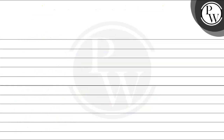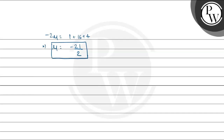So we have 1 + 16 + 4 + 2μ = 0, which gives 2μ = −21, and therefore μ = −21/2. We have found the value of μ. I hope you understood it well — best of luck!